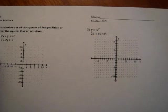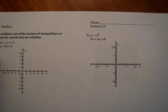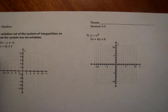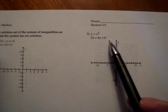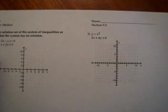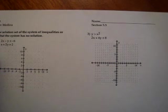I'm going to start with number three. Remember the trick to these systems of inequalities is that the solution set is actually a region on the graph. We're looking for a region where all the points will be solutions to the system — meaning they make both inequalities true. A solution is something that makes the inequality or equation true.